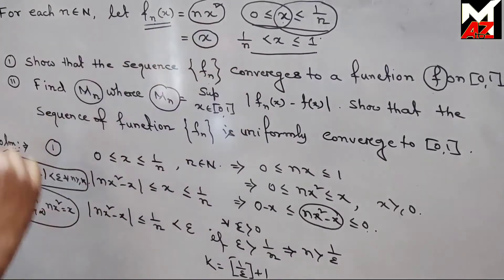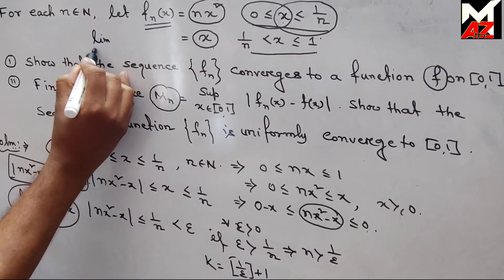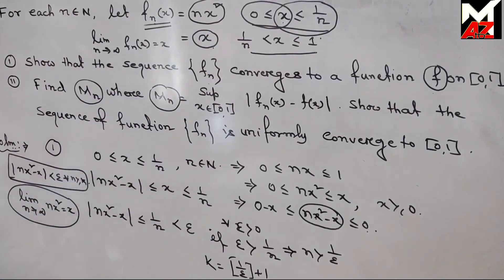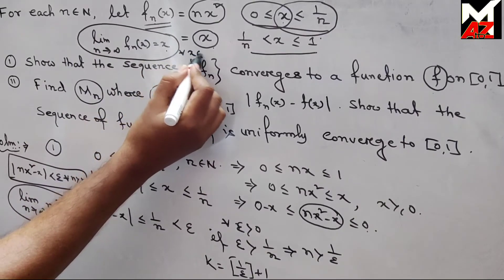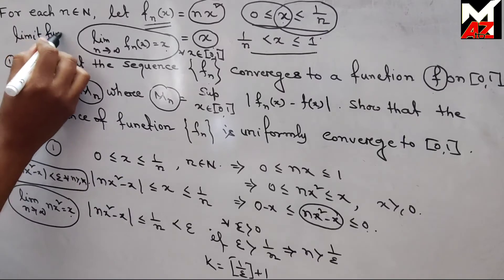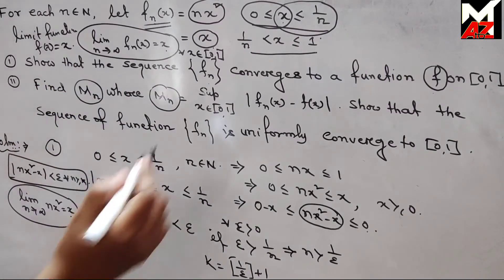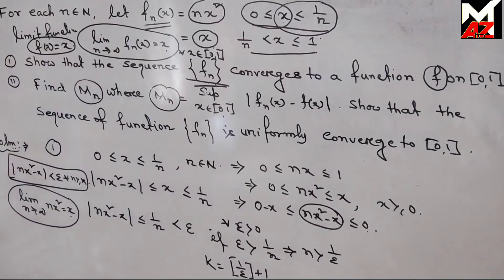In the interval (1/n, 1], f_n(x) = x, which is constant with respect to n. So the limit as n tends to infinity of f_n(x) is the function itself. Since both limits equal x, for all x in [0, 1], the limit function is f(x) = x. This completes the solution of part 1 — the sequence of functions f_n(x) converges to f(x) = x.